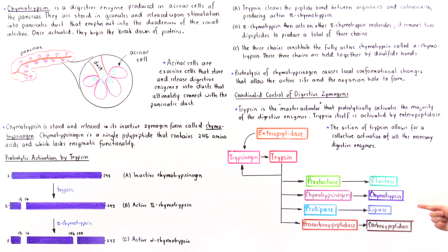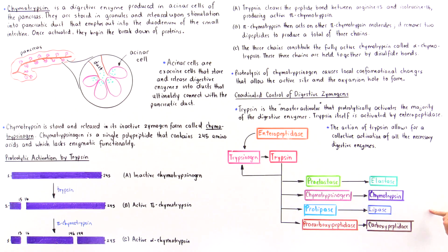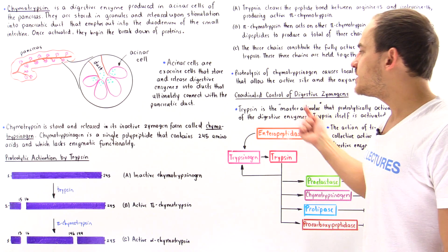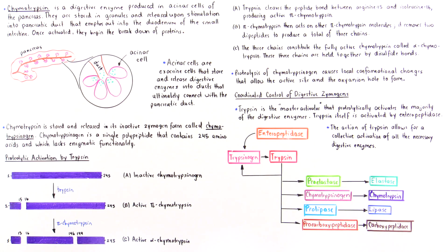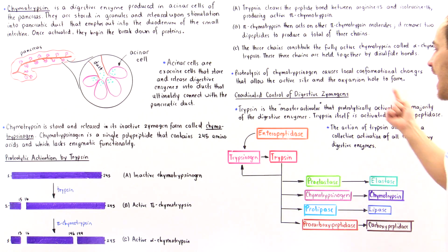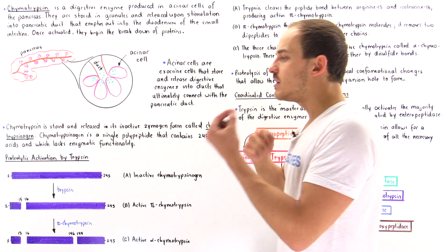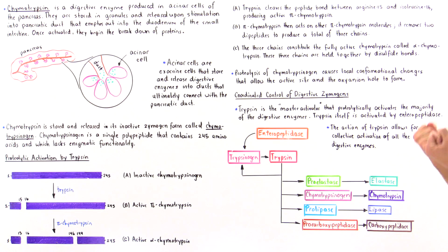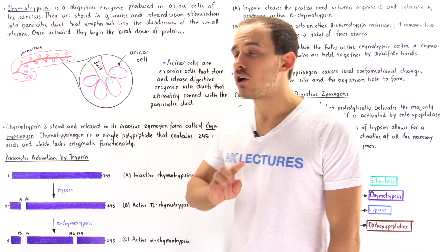Trypsin also activates prolipase into lipase, which is used to break down the lipids we ingest, and procarboxypeptidase into carboxypeptidase. So trypsin is the master activator that proteolytically activates the majority of digestive enzymes, including itself, while trypsin itself is first activated by enteropeptidase.